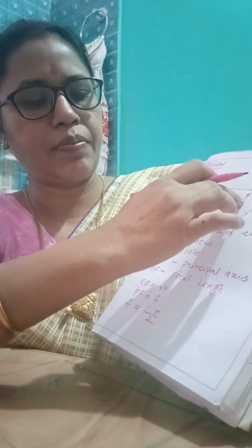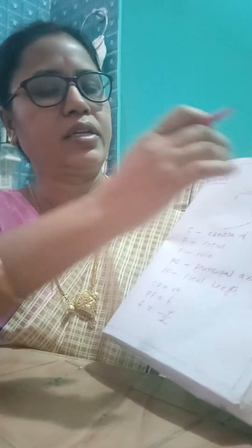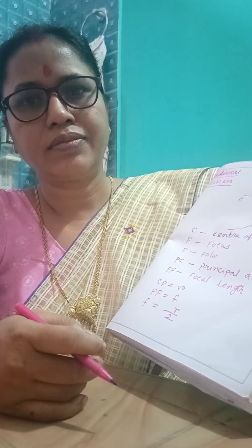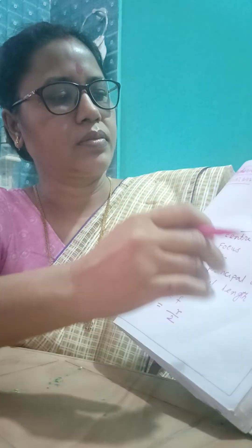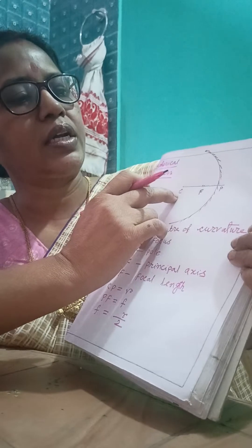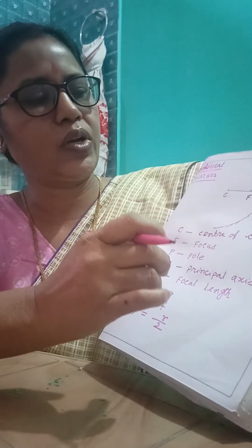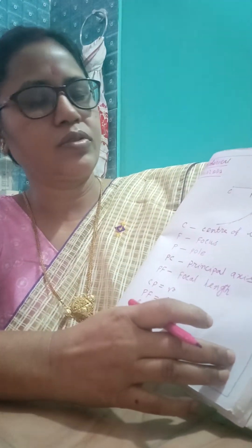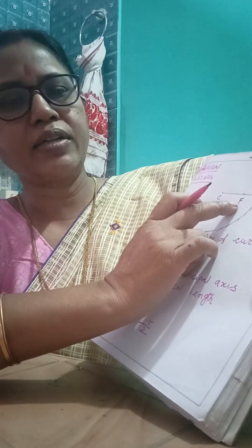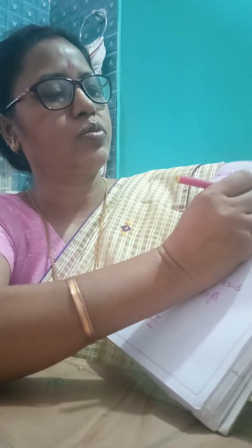F is the focus, and it is the midpoint of the radius of curvature. The line joining the center of curvature and the pole is known as the principal axis. The distance between the focus and the pole is known as the focal length, represented by small f.